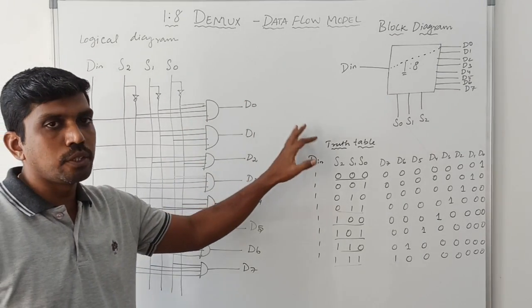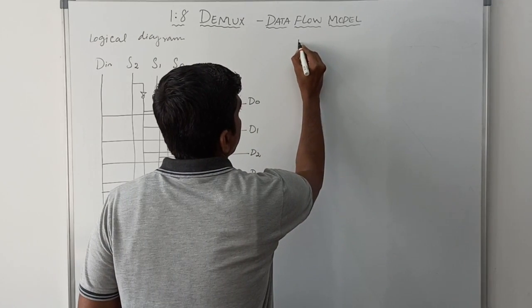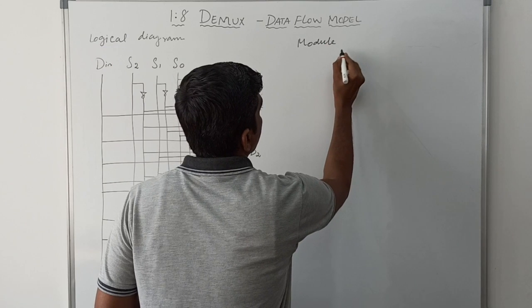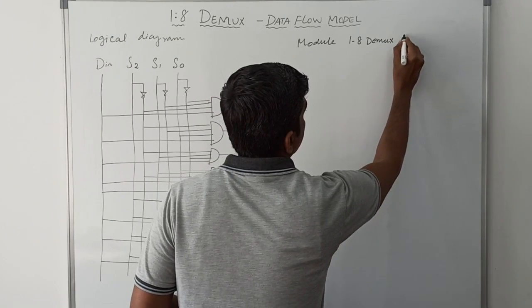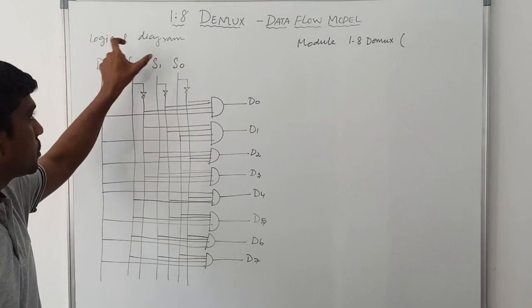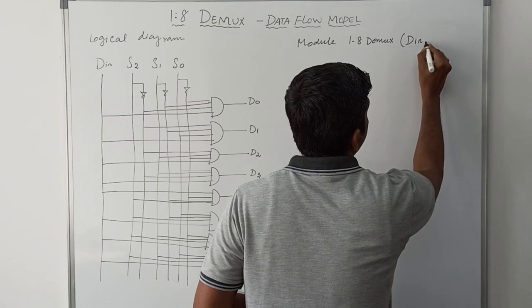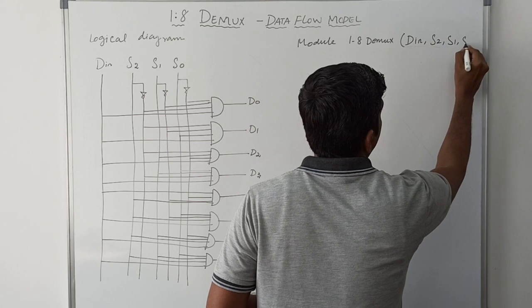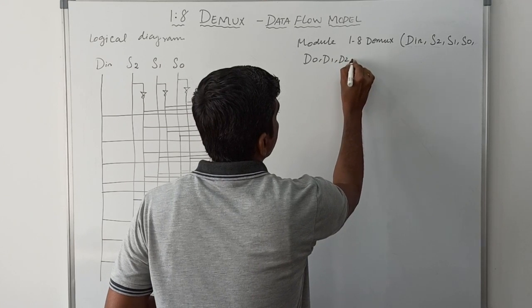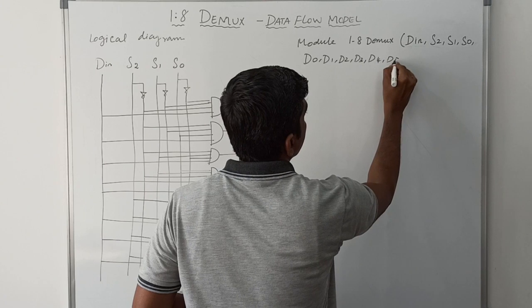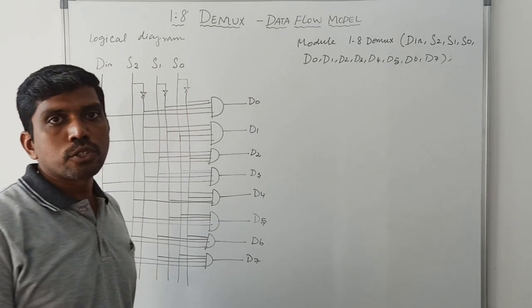This logical diagram is now converted into Verilog HDL. Using this logical diagram, I am going to write the program. First write 'module', then the module name '1_to_8_dmux', then declare the variables. The variables used in the logical diagram are: DIN, S2, S1, S0, D0, D1, D2, D3, D4, D5, D6, D7.